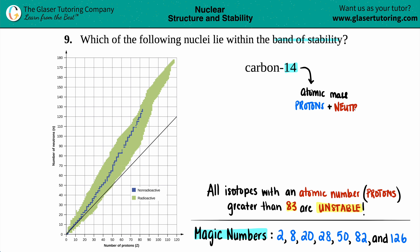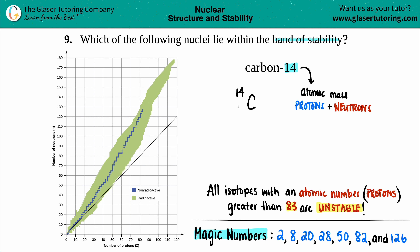If we write this out in nuclide notation, we have C for carbon, and the atomic mass goes on the top. The bottom number on the left-hand side is always your atomic number — that's the number they didn't give us. But every element has its own unique atomic number, so we go to the periodic table. Carbon's atomic number is 6, and the atomic number is the total number of protons — so I have 6 protons.